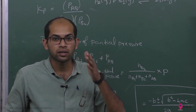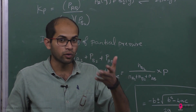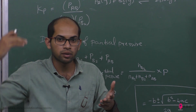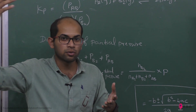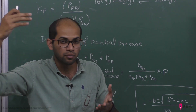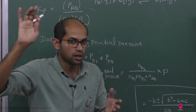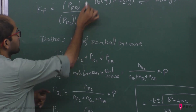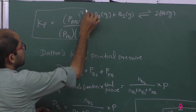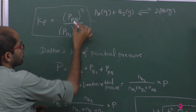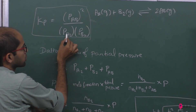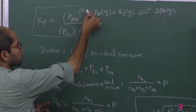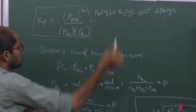Kp is the value of the product's partial pressure divided by the partial pressure of the reactants, each raised to the power of the number of moles. So the formula is: partial pressure of AB squared, divided by partial pressure of A₂ multiplied by partial pressure of B₂.